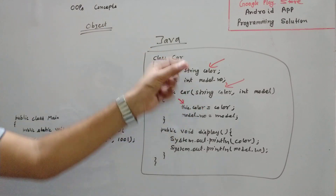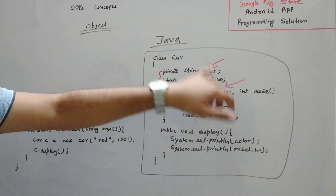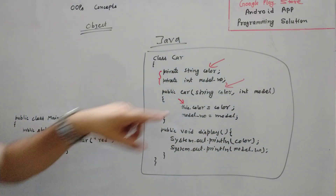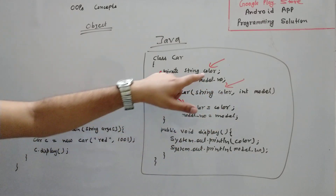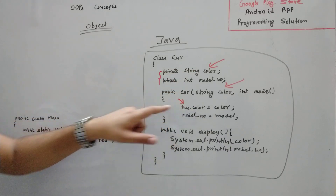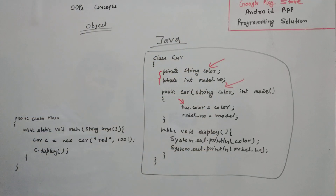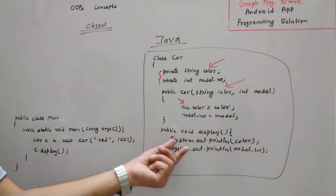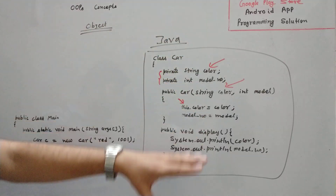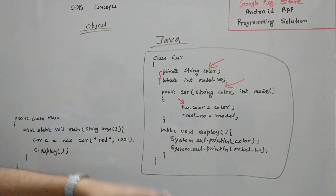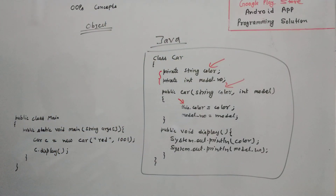Whenever we are using the same variable name at class level and local level, priority goes to the local variable. That means if we don't use the 'this' keyword, then 'color' refers to the local variable only. So we have to use 'this' keyword which refers the variable to the class level variable. We will discuss about it in later videos, so don't worry about it. We have a function 'display' which can display the color and model number. It might be possible that we have multiple functions like how to drive, how to brake, and so on. And we have multiple properties like color, shape, size and so on.